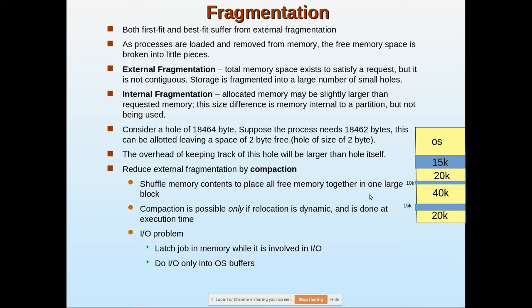Compaction is possible only if relocation is dynamic. When a process is moved to a new location, the physical address offered by that process changes, so the base register and limit register all need to be updated. That is why relocation must be dynamic for compaction to work.